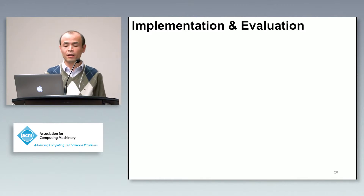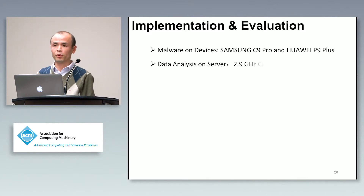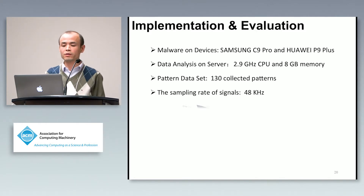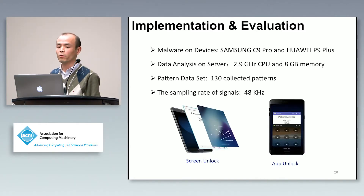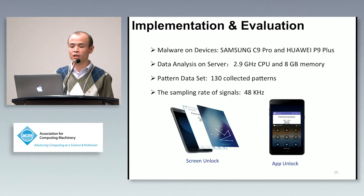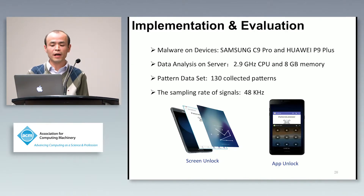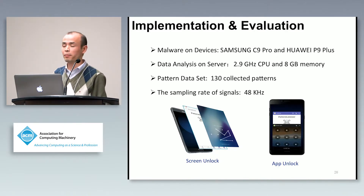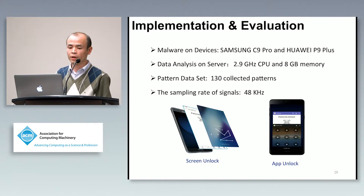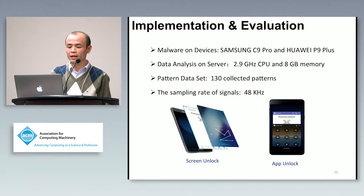Here is the implementation. We implemented the malware on Samsung C9 Pro and Huawei P9 Plus, and analyzed the signal data on commodity servers. We collected 130 patterns from volunteers, and the sample rate for collecting signals is 48 kHz.